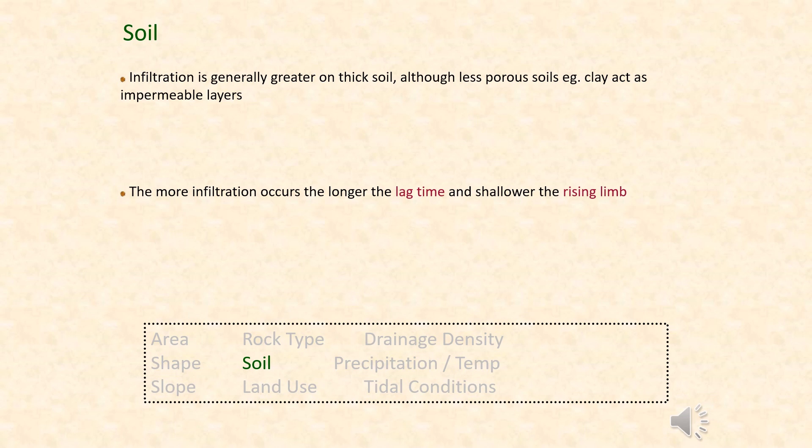The soil on the surface is also an influencing factor, affecting the amount of water that infiltrates into the soil and how quickly that occurs. Clay soil, which is quite impermeable and not very porous, creates much more surface runoff and therefore a shorter lag time. Sandy soil, on the other hand, increases the amount of infiltration, resulting in a much shallower rising limb and less potential for flooding.